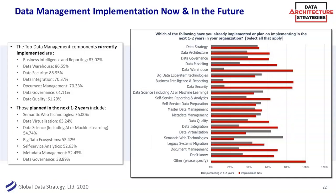Looking at what folks are currently implementing: BI, warehousing, and governance and quality around that. For the next few years, semantic web was surprisingly the highest future technology respondents are interested in. Virtualization — can we have a data virtualization layer without moving the data at all? — is also interesting. Other areas include data science, analytics, big data, self-service BI, and metadata management and governance to support business users who are increasingly data-savvy.